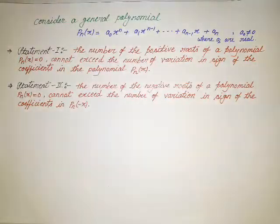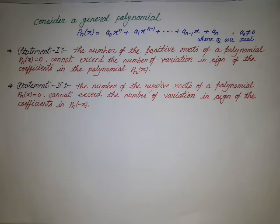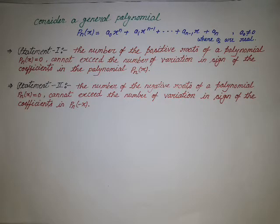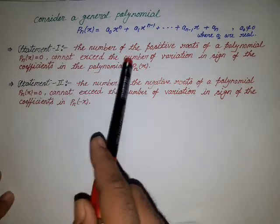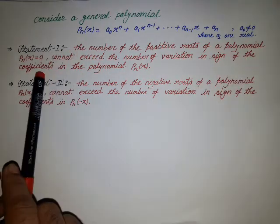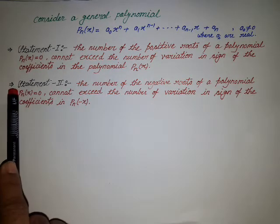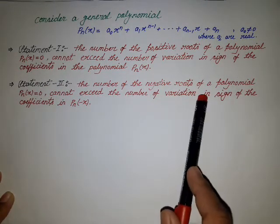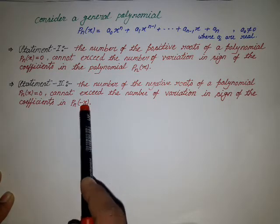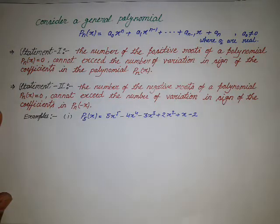Consider a general polynomial P_n(x) = a₀xⁿ + a₁xⁿ⁻¹ + ... + aₙ, where a₀ ≠ 0 and all aᵢ are real. This rule has two parts. Statement one: the number of positive roots of P_n(x) cannot exceed the number of sign variations in the coefficients of P_n(x). Statement two: the number of negative roots cannot exceed the number of sign variations in the coefficients of P_n(−x).